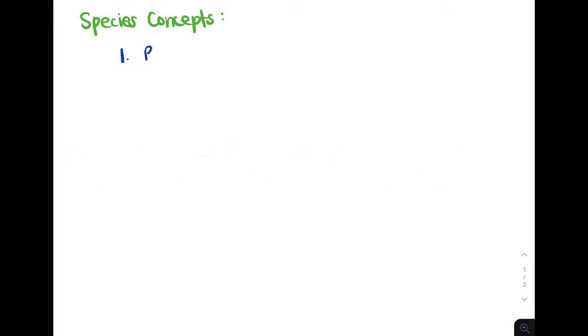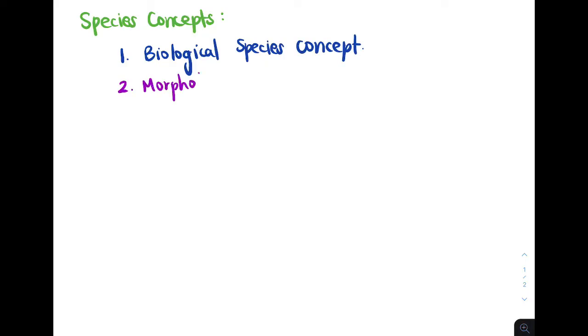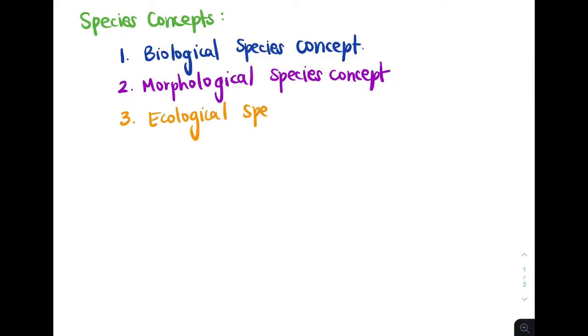Let's talk about species concepts. There are four main types: the biological species concept, the morphological species concept, the ecological species concept, and the phylogenetic species concept.